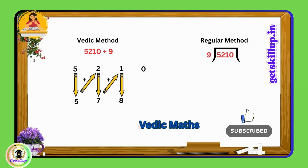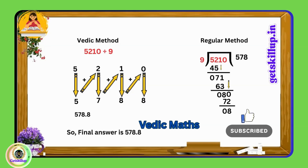Add this result to the next digit: eight plus zero equals eight. Continue this process until you reach the last digit. The answer is 578 remainder 8. All digits except the last one form the quotient; the last digit represents the remainder. Therefore, for 5210 divided by nine, the final answer is quotient 578 with remainder 8.